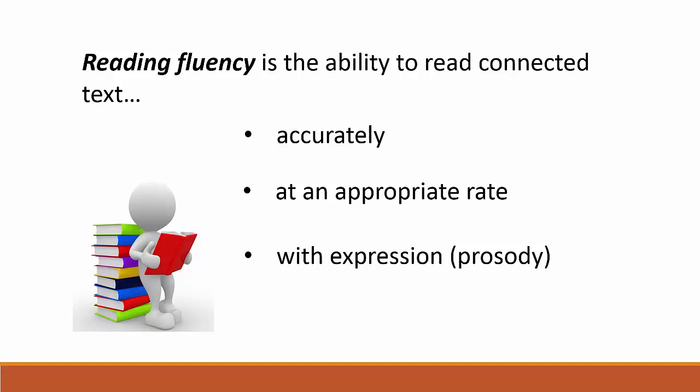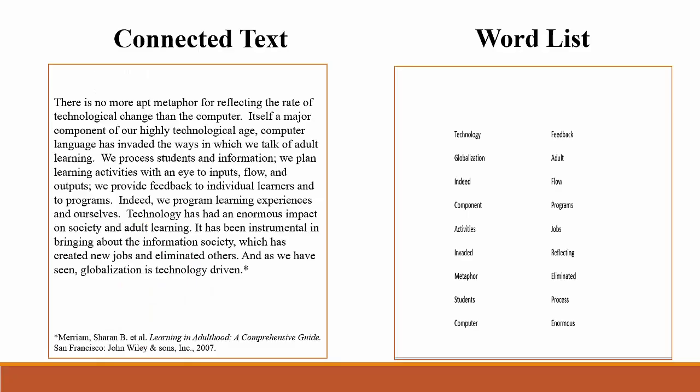Let's take a few minutes to look at this definition carefully. First of all, what do I mean by connected text? Connected text means text that is presented in phrases, sentences, or paragraphs, like you see on the left. It's distinguished from just a list of isolated words, like you see on the right.